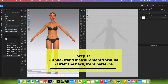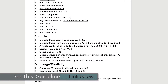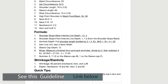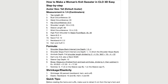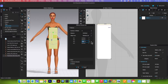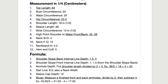I'm here in Flow. Before we begin drafting the pattern, let's have a look at the measurement and formula needed to draft this knit pattern. Here we will use the default avatar, and we have two sections: measurement and formula. We will begin by drafting a back pattern using these numbers and formulas. For example, the top length is 63, hip circumference is 22.5, and we will refer to these measurements and formula throughout this course.